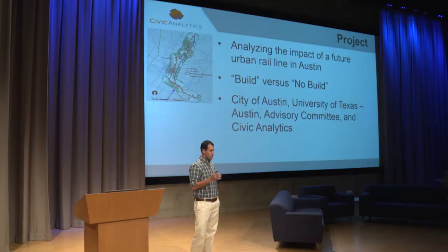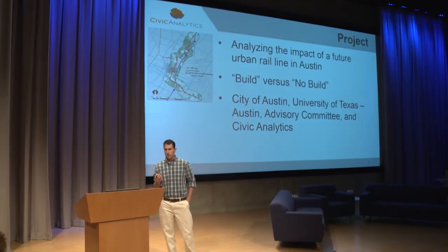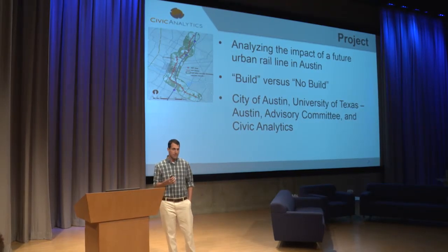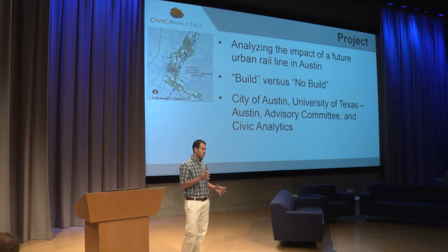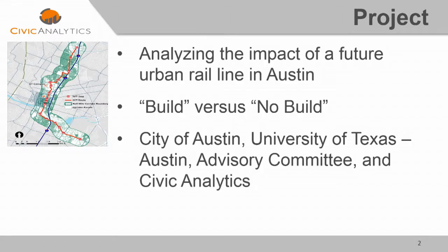The project started at the beginning of last year when urban rail went on the ballot for November, and the City of Austin wanted to know what happens if you build urban rail and what happens if you don't build urban rail from an economic development standpoint. The major collaborators were the City of Austin, the University of Texas, a citizen advisory committee made up of neighborhood stakeholders and leaders, and Civic Analytics.